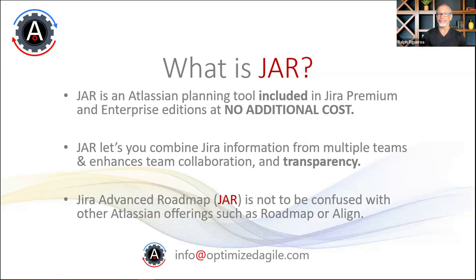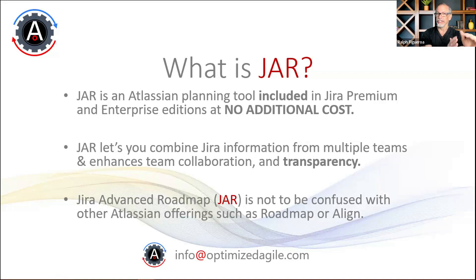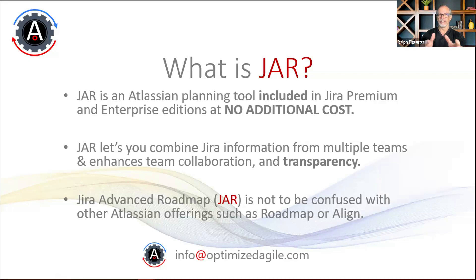It's important to distinguish three Atlassian offerings: Jira Roadmap, which I call basic roadmap — it's free but only shows one team with limited dependency tracking. Then there's Jira Advanced Roadmap, the tool we're covering today. And separately there's Jira Align, which is a paid subscription with a steep learning curve but a very powerful tool. So there are three distinct offerings from Atlassian; the one we're covering today is Advanced Roadmap.